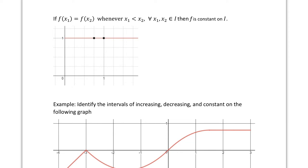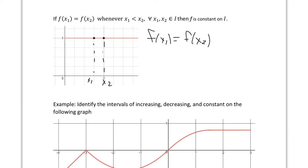There's one more definition: a constant function. If f(x₁) = f(x₂) whenever x₁ < x₂, for all x₁ and x₂ in I, then f is constant on I. Looking at this flat graph, we pick x₁ and x₂ and notice f(x₁) equals f(x₂). Whenever you pick two points and the function has the same y-value, we say that function is constant on the interval.